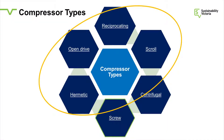There are many different compressor types out there — it's a big industry. We talk about things like hermetic and open drive, reciprocating, scroll, centrifugal, and screw compressors. Not all of those are applicable to commercial refrigeration. We're not going to talk too much about centrifugal and screw — those are the realms of commercial air conditioning and industrial refrigeration. We'll talk about open drive and hermetics, and we'll talk about reciprocating and scroll because they are widely used.